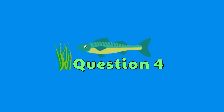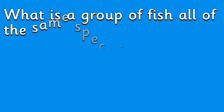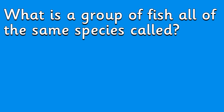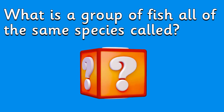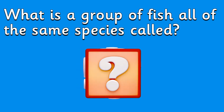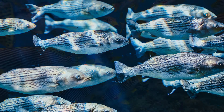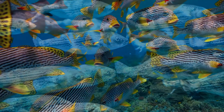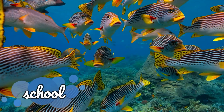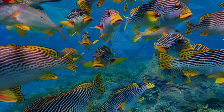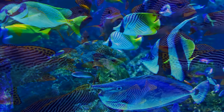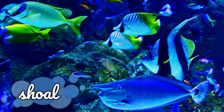Question four. What is a group of fish all of the same species called? A group of fish of the same species is called a school, whereas a group of fish that are a mixed species is called a shoal.